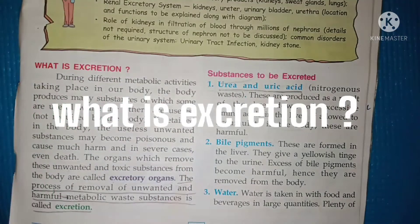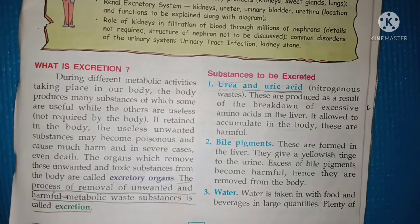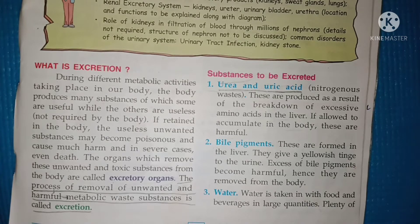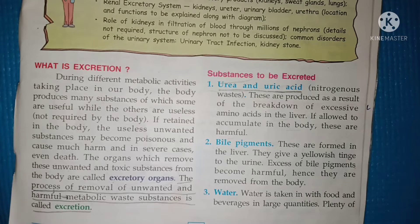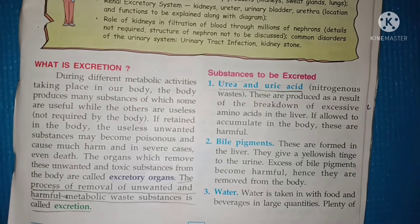First, let me explain what is meant by the term excretion. Different metabolic activities take place in our body, and during those metabolic activities our body produces many substances which may be useful and not useful — means not required. If these are stored in our body, they become poisonous. That's the reason they should be removed. The removal of these unwanted toxic substances is carried out by excretory organs.